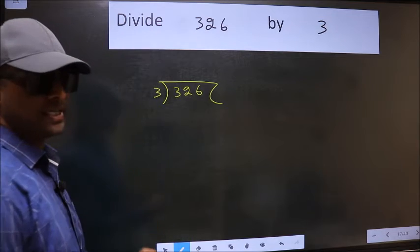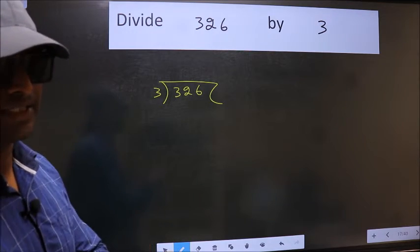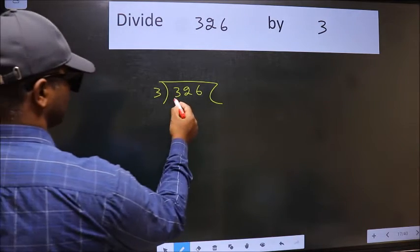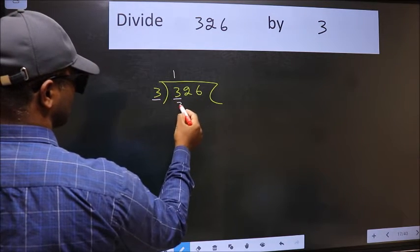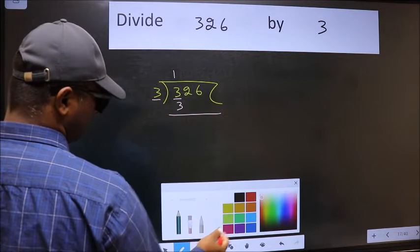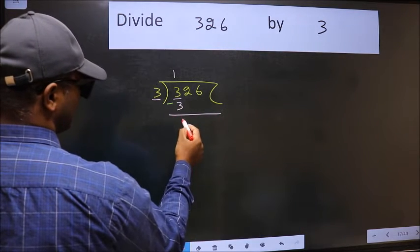This is your step 1. Next, here we have 3, here also 3. When do we get 3 in 3 table? 3 once 3. Now we should subtract. We get 0.